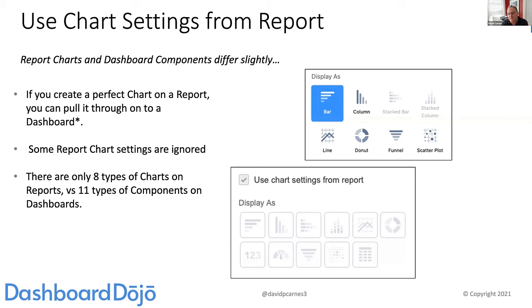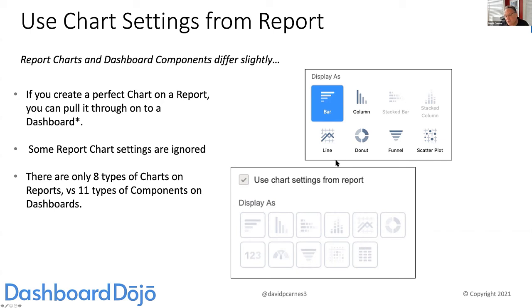There is always the ability to use the chart settings from the source report. You can create a report, add a chart to it, save it, and then when you create your dashboard and add a component, rather than recreating the wheel, you can pull through the chart settings from the source report and display it on the dashboard. Report charts have only eight kinds, while dashboards have 11 kinds of components — so it's not a one-to-one match. Reference lines and a couple of other things will not pull through when you create a dashboard.